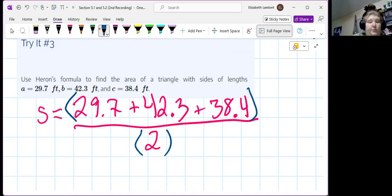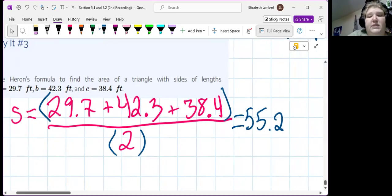The 29.7 plus 42.3 plus 38.4. So, the full perimeter is 110.4. And then we divide that by 2 and we get 55.2. Technically, feet.